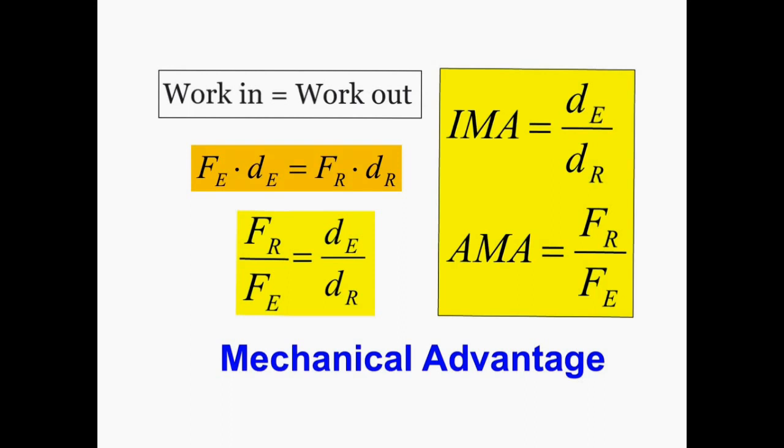The amount of work you put into a system with the effort has to equal the amount of work that the system puts out to lift the resistance. So to work simple machine problems, you assume that work in is going to equal work out. This can also be written as the force of effort times distance of the effort is going to equal the force of the resistance times the distance of the resistance. Then you can manipulate the equation by putting the forces on one side, and then putting the distances on the other side.